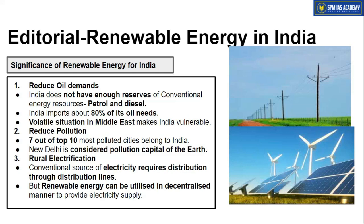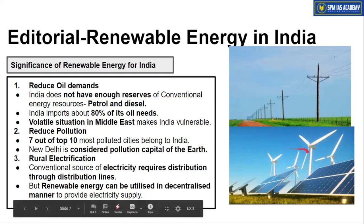India does not have enough oil reserves to meet its energy needs for petrol and diesel, and that is why India imports about 80% of its oil. Most of this import comes from West Asia, which is politically and security-wise a volatile region where tense situations arise frequently. This makes India always vulnerable — if there is a tense situation, oil and gas prices rise sharply and supply may be cut off, creating an energy security risk. This is an important reason India should focus on building renewable energy sources.